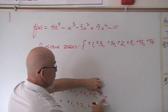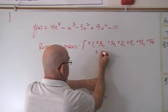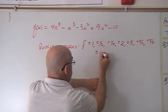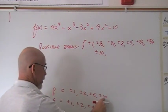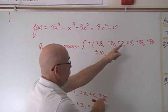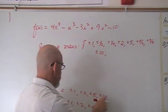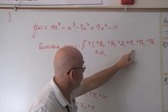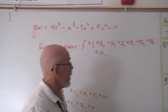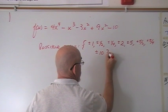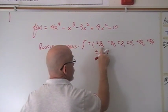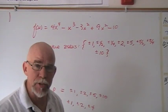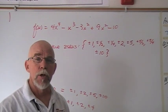Then we go to 10: plus or minus 10 divided by 1 gives plus or minus 10. Plus or minus 10 divided by 2 is 5 — already in the list. Plus or minus 10 divided by 4 reduces to 5/2 — already in the list. This gives us 16 possible rational roots in total.